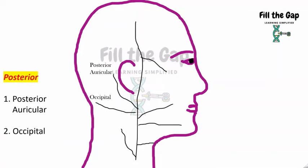Now, posterior is anything behind the ear or behind the head. So, posterior auricle, auricle means ear, behind the ear and occipital behind the head.